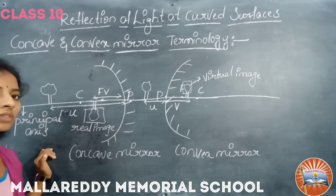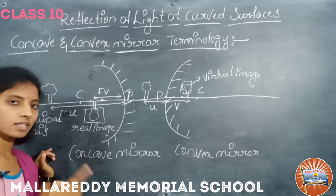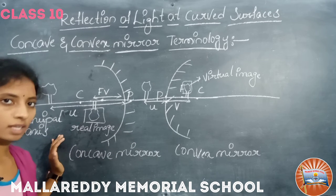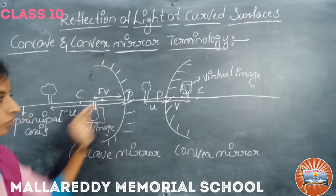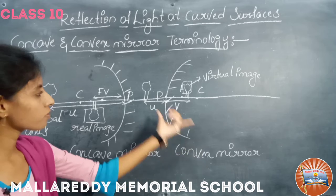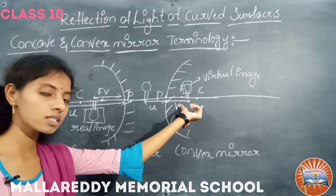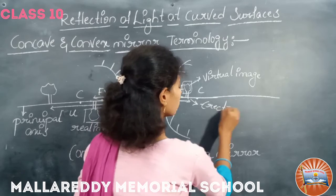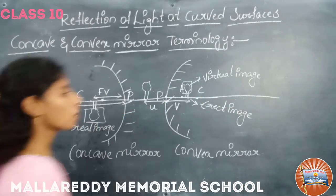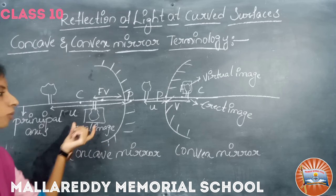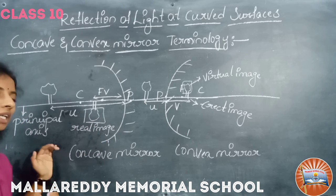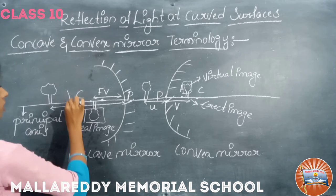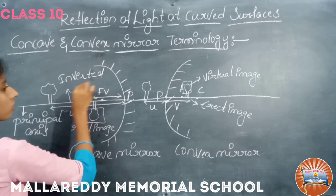If the object and the image formed are in the same direction — right way up — those are known as erect images. In a convex mirror, the object and image formed are in the same direction, so this is an erect image. If the object and image formed are in opposite directions — one up and one down — those are known as inverted images.